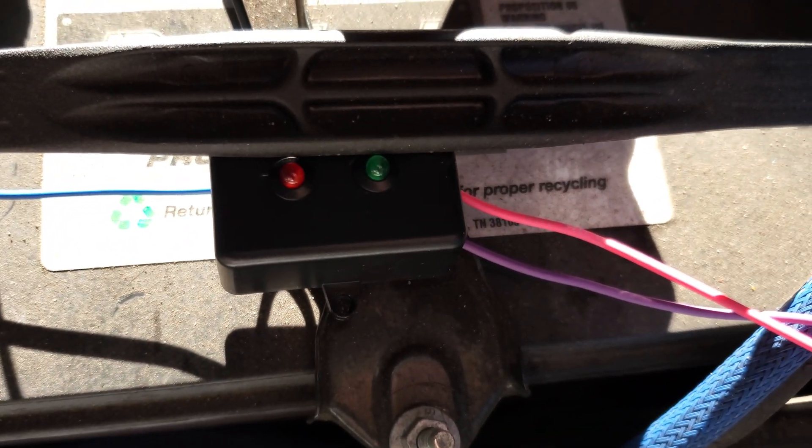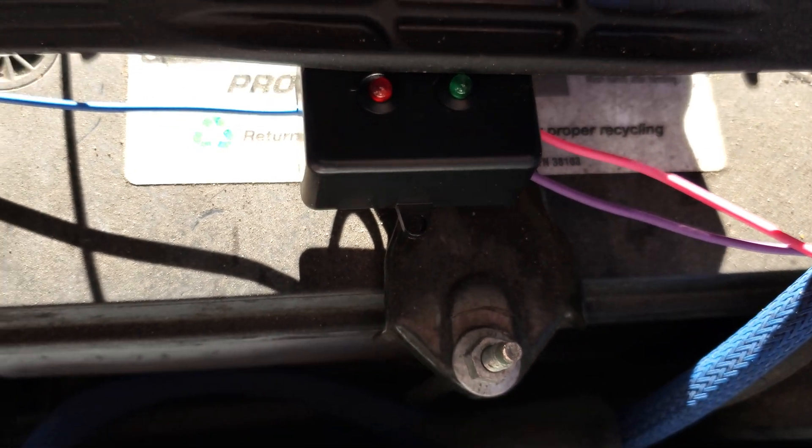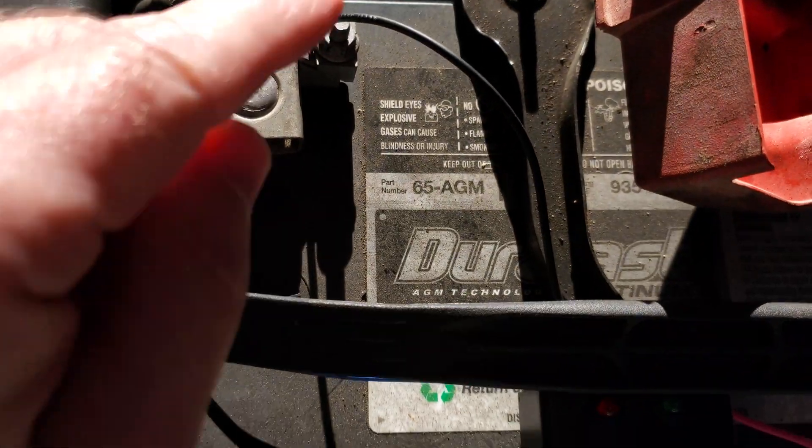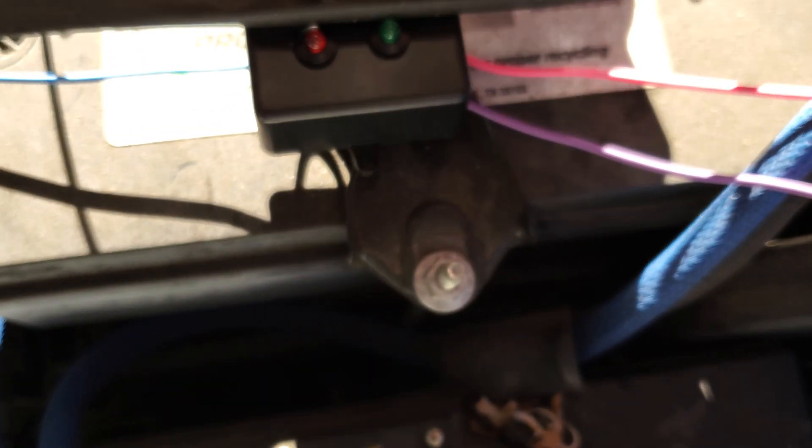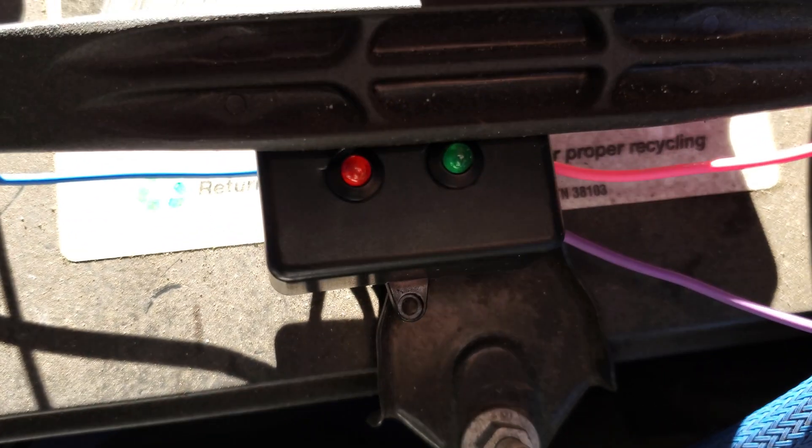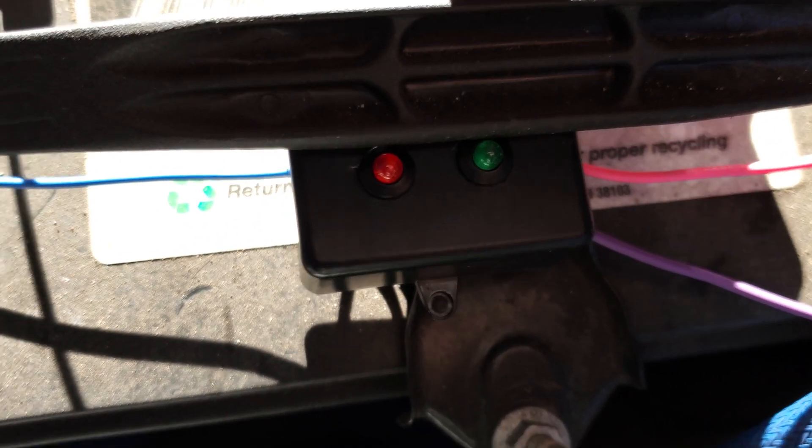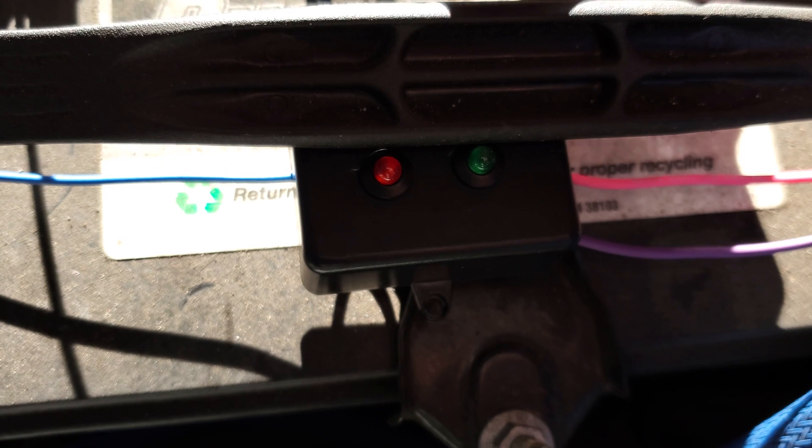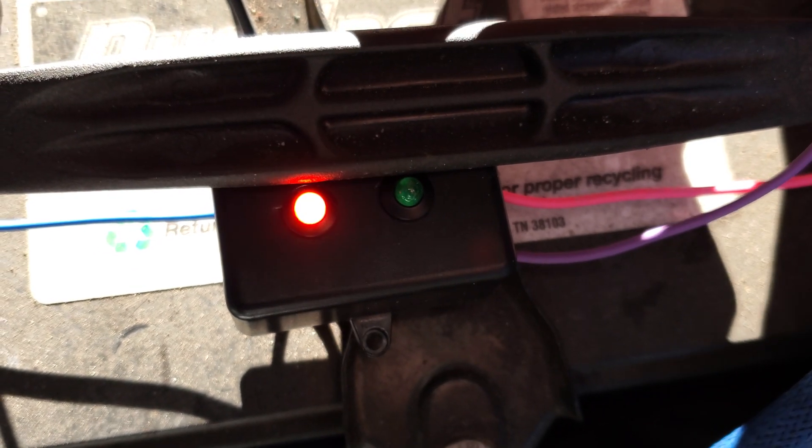Last thing to do here is test this out. This is a little tricky, I don't have a battery for the other car yet so I keep having to use my Flex. I've got the ground connected to the ground, take the pink wire. If I put that on the positive lead of the battery, there you go, the green lights up. If I take the purple, put that on there, red light.